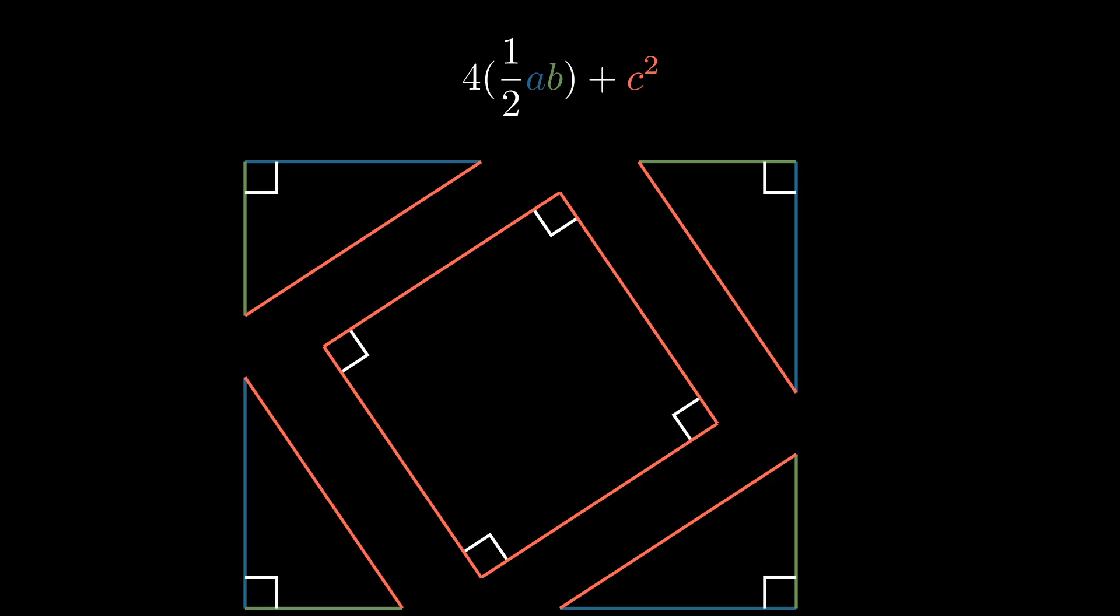So now, we have two alternative definitions for the area of the large blue and green square, and we write it below.